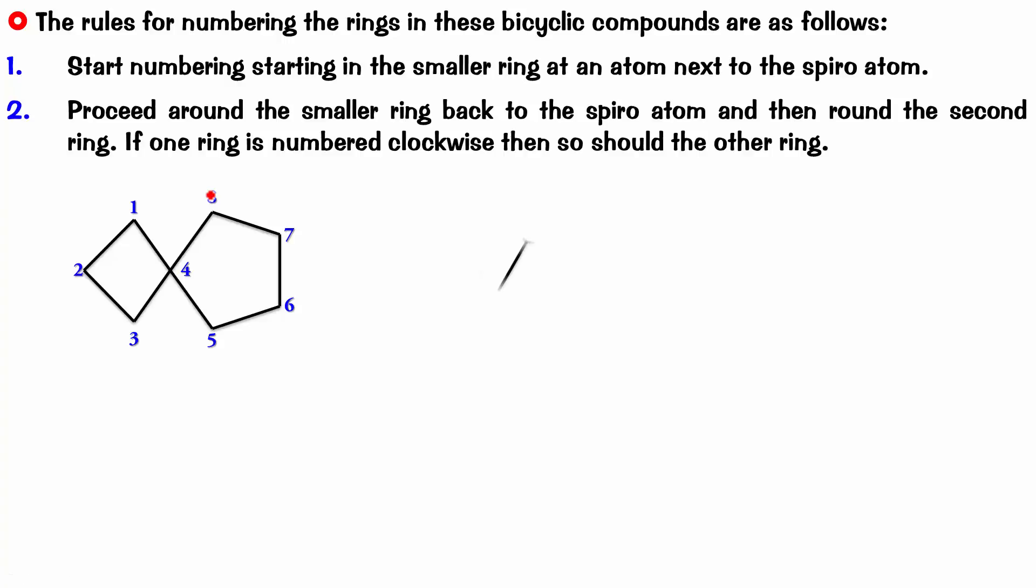Try naming this compound. Now comes the crucial question, which is one. This is the spiro atom. Now, suppose I take this as one, two, three, four, five. Then, obviously, this is six, seven, eight, nine, ten. Can you see that my substituent is getting the largest number, ten? Then, try the other way around.